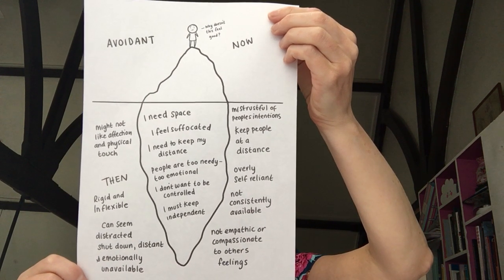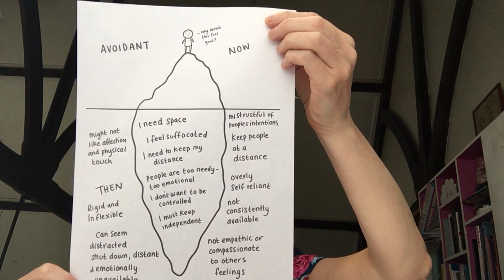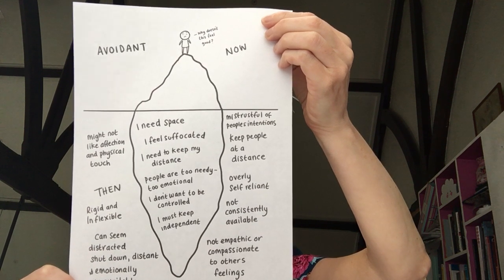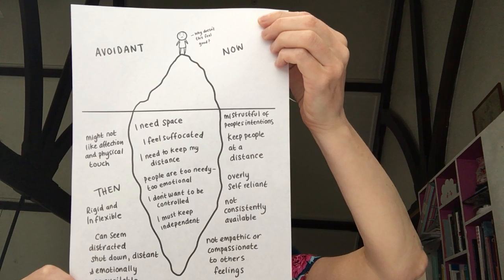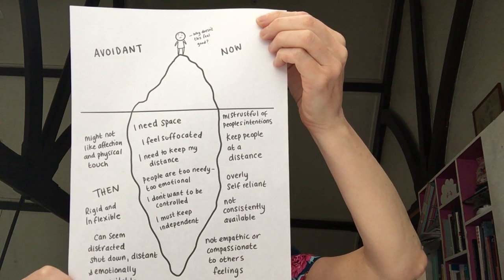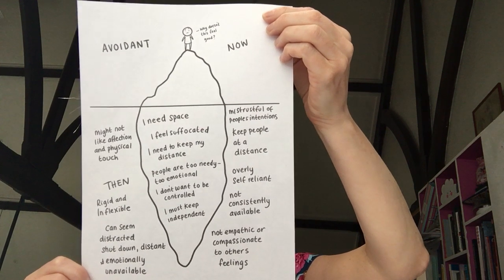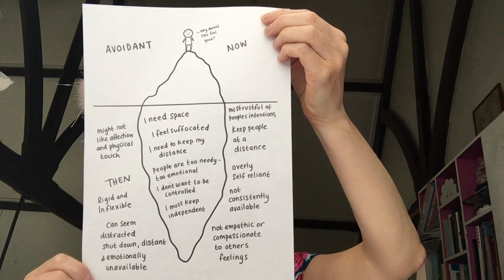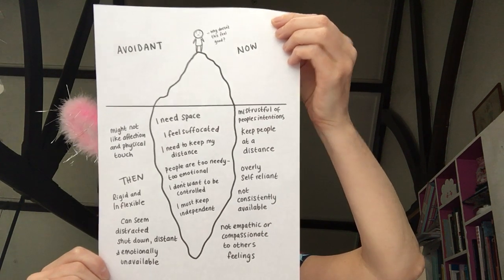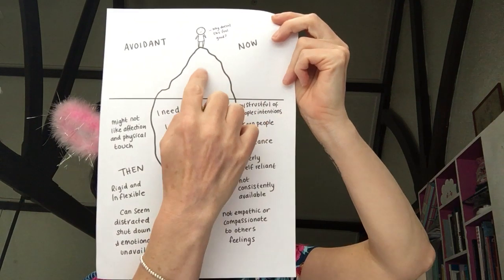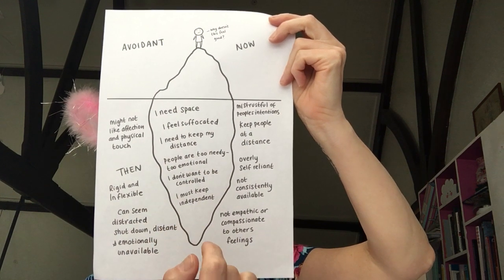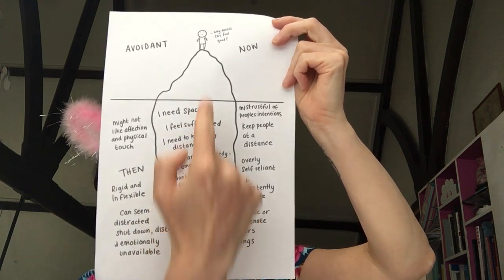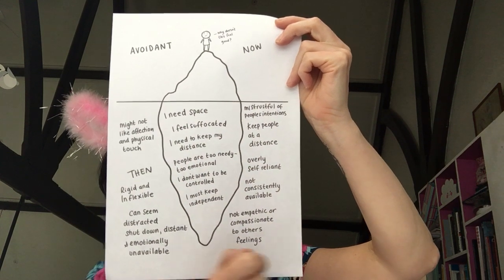Or maybe they had someone very controlling, so now they're scared of repeating that pattern. Avoidant thoughts can include: I need space, I feel suffocated, people are too needy or emotional, I must keep independent. They might not like much physical attention, can seem distracted, distant, emotionally unavailable, mistrustful, and overly self-reliant. Like an iceberg, these subconscious thoughts are coming up into the present — helpful then, but not helpful now.